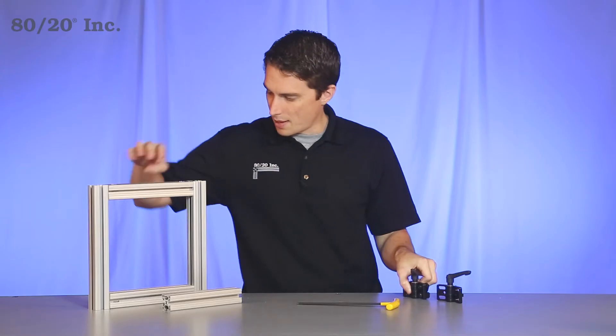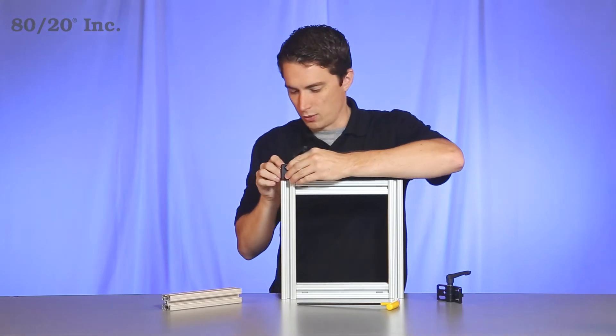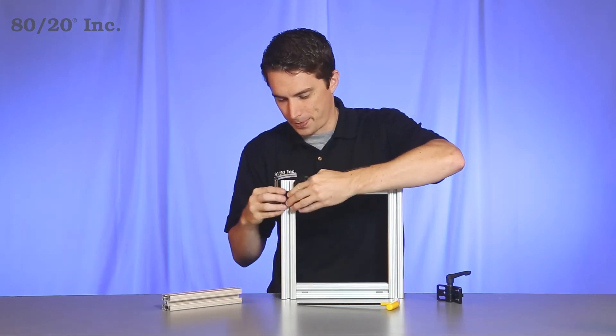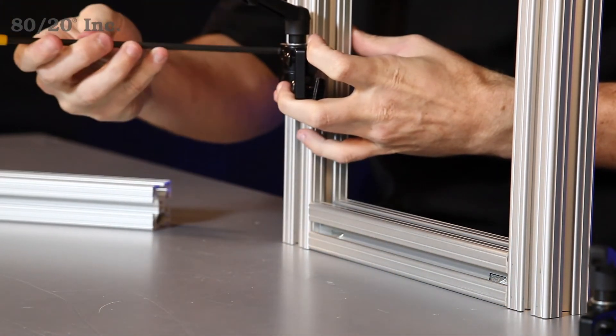Once we've got that on there, we'll grab our frame and install half the hinge, sliding it right into an open T-slot. Find the location we want and tighten it down.